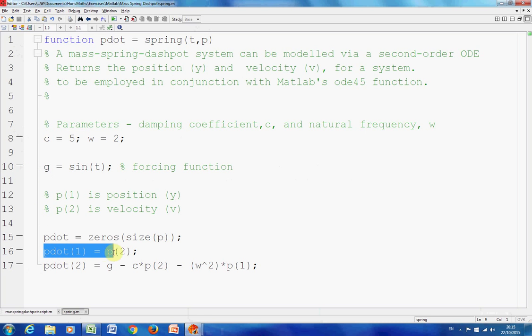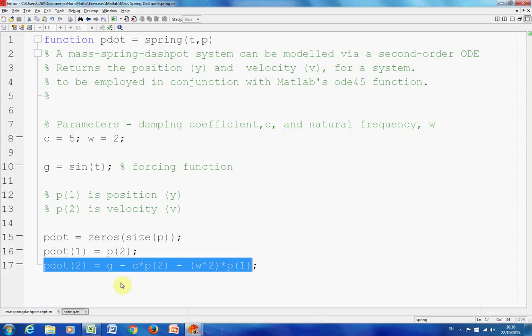The line that's highlighted there is the first first-order differential equation, that would be the velocity part. The velocity part, the initial bit there is equal to P2, so that would be the initial position for the velocity. And then here, the equation is given in the notes.